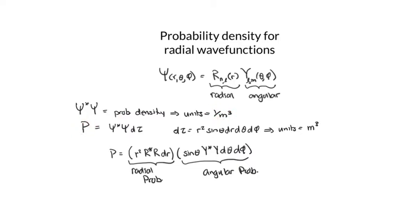The probability in a given volume element is psi star psi times that volume element. In spherical coordinates, that volume element is equal to r squared sine theta dr d theta d phi, and the units of this volume element, because it's a volume, are meters cubed. So if I take the probability density and multiply by a small volume element, I get a true dimensionless probability.